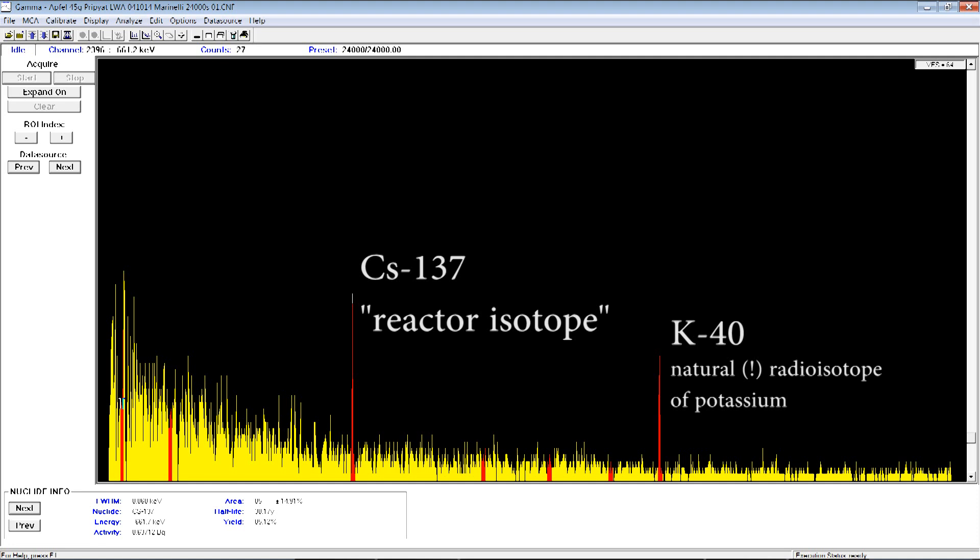So this is the spectrum after 24 hours, with background subtracted. You can probably only read the numbers on the bottom left if you watch this video in HD and full screen it, but it says that for this cesium-137 peak we have an activity of 0.63712 Bq for a 16.5 gram sample. That means that one kilogram of the apple has an activity of roughly 39 Bq, so 39 decays per second from cesium-137 in one kilogram of these apples. Now let's actually put that into perspective.